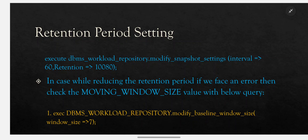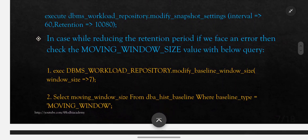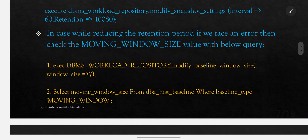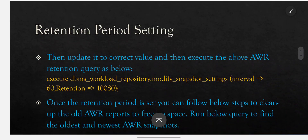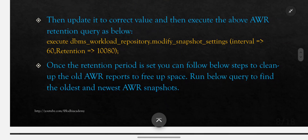In case while reducing the retention period you face an error, check the moving window size value with: EXECUTE dbms_workload_repository.modify_baseline_window_size(7); and SELECT moving_window_size FROM dba_hist_baseline WHERE baseline_type = 'MOVING WINDOW'; then update it to the correct value and re-execute the AWR retention query.